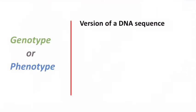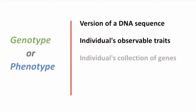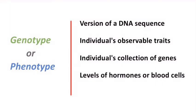We all are familiar with these two terms. Let's do a matching and identify which criteria matches with the genotype and which with phenotype. First, version of a DNA sequence: genotype. Individuals observable trait: phenotype. Individuals collection of genes: genotype. Levels of hormones or blood cells: phenotype. Homozygous dominant: genotype. So we can say that genotype is the genetic makeup of an individual and phenotype is the observable traits.